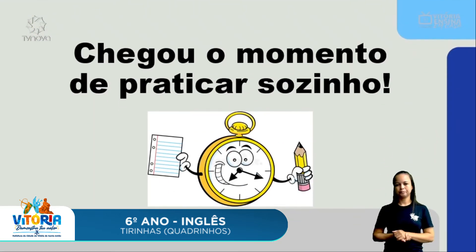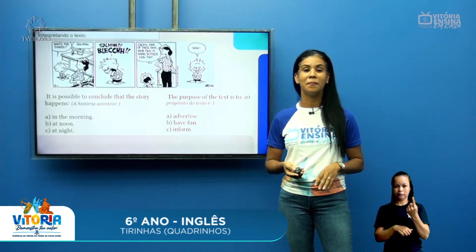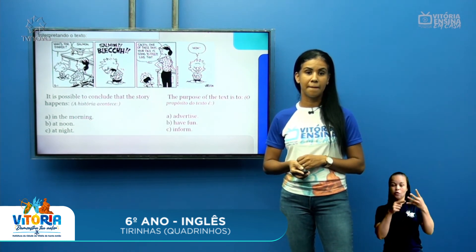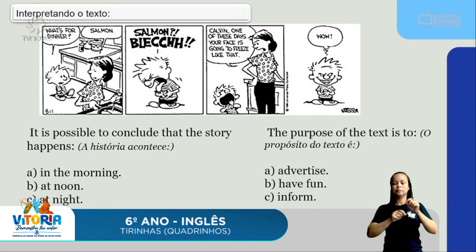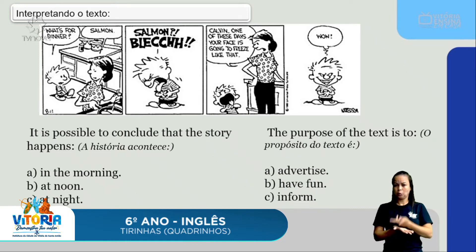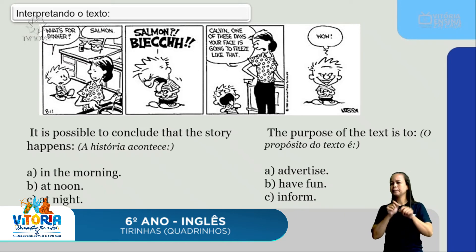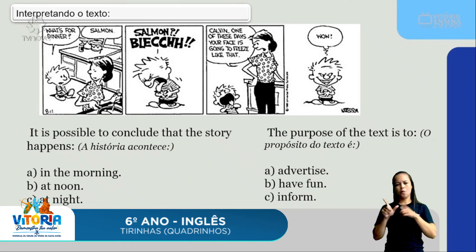Chegou o momento em que você pratica sozinho. Observe esses quatro quadrinhos. A primeira questão: 'Is it possible to conclude that the story happens?' — A) in the morning, B) at noon, ou C) at night? Já a segunda: 'The purpose of the text is to' — A) advertise, B) have fun, ou C) inform? Observe a historinha — tem uma palavrinha que vai ser a palavra-chave. No primeiro quadrinho ele pergunta: 'What's for dinner?' Se você sabe que dinner é jantar, já matou a charada.